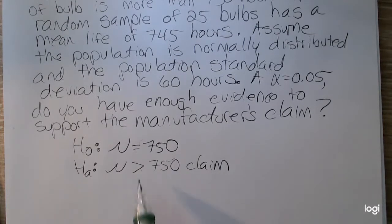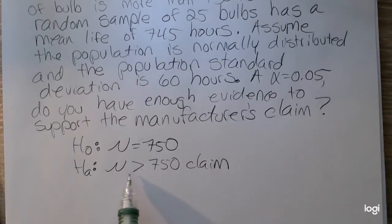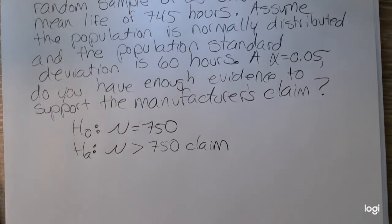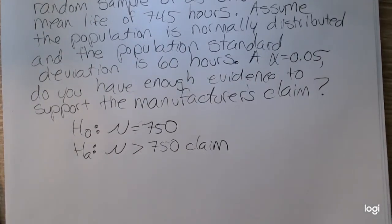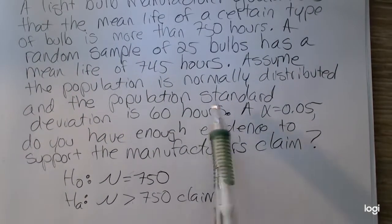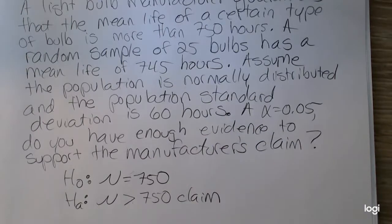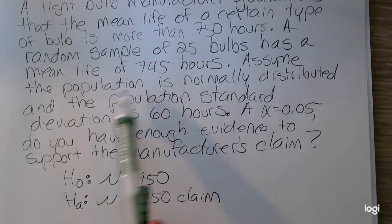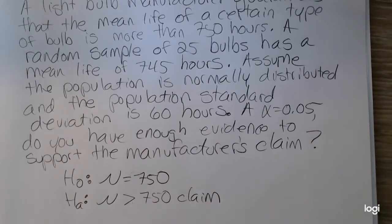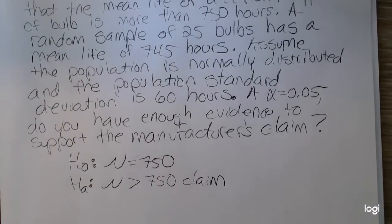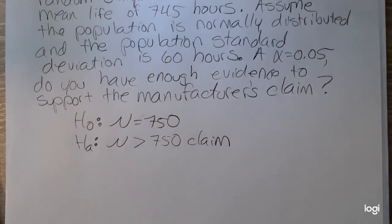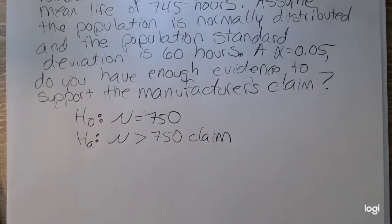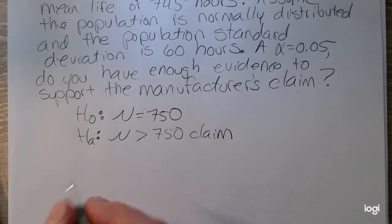Looking at this null and this alternative, I know that this is going to be an upper-tailed or right-tailed test. Because the population standard deviation is known, and because my sample size is less than 30, I need to be told that the population is normally distributed. So the conditions are met to use the Z distribution or use the standard normal distribution.